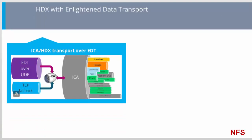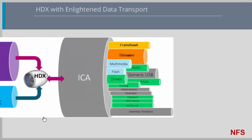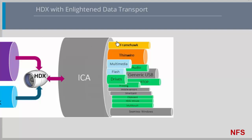One of the main aims of EDT is to support TCP and UDP for all virtual channels. Rather than having a heterogeneous stack of HDX transport over TCP and UDP, EDT over UDP unifies the traditional ICA stack by adding this enlightened transport to every virtual channel. This allows best performance for both interactive task-oriented workloads such as keyboard, mouse, and screen graphics, as well as delay-sensitive workloads such as Skype calls and video.